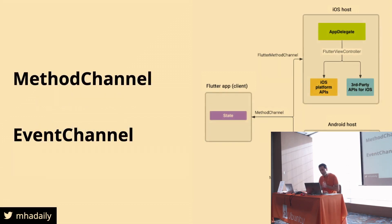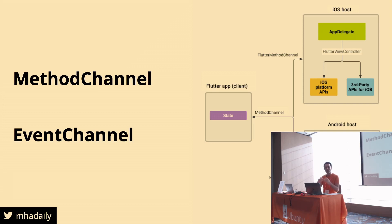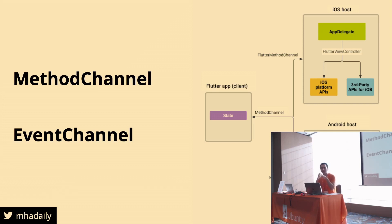There are two different channels you can open. There is a method channel where you run your code once and get a callback or response back. And there is an event channel where it's like a stream — you open a channel that continuously runs and keeps sending data back, like a battery charging status where you want to continuously get the charging status of the host device.